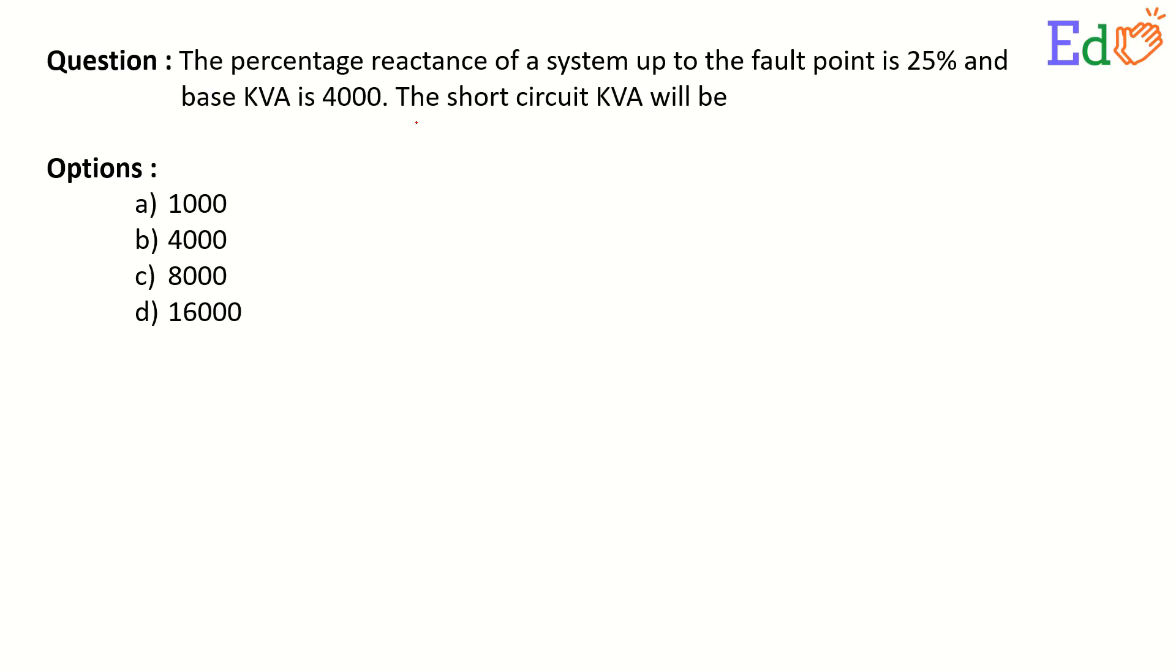The percentage reactance of a system up to the fault point is 25% and base KVA is 4000. The short circuit KVA will be: option A, 1000; B, 4000; C, 8000; and D, 16000.